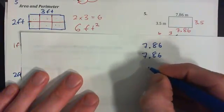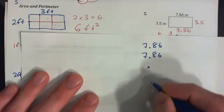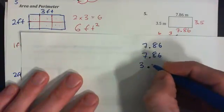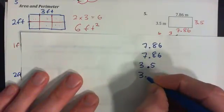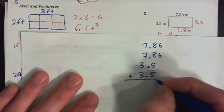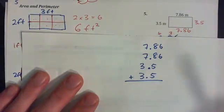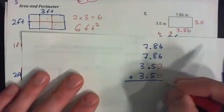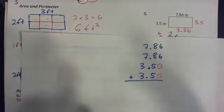Now if we're adding, what do we do with the decimal points? They must be underneath each other, see that? Does that make sense? And if you want you can put in a placeholder 0 for the 3.5 because we're adding.